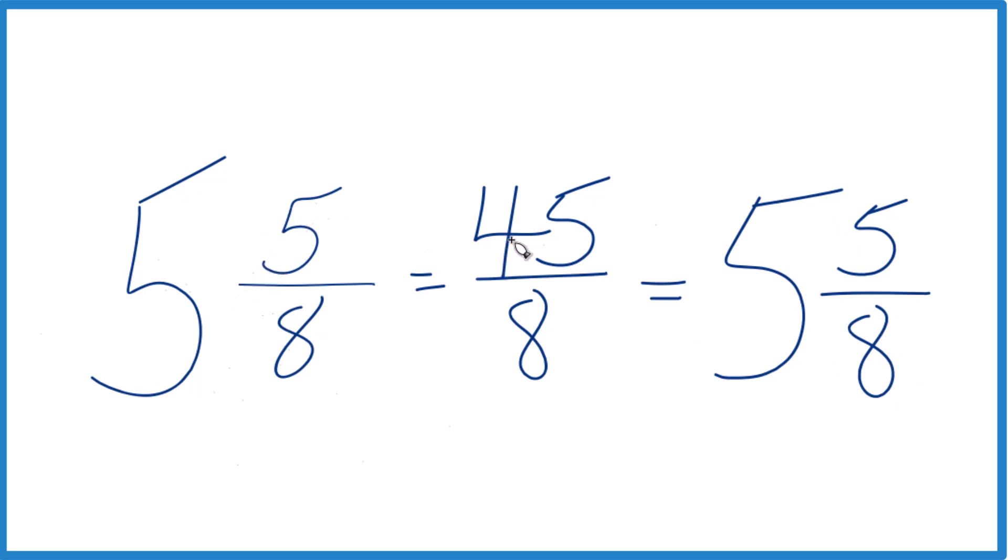And 5 and 5 eighths and 45 eighths, they're equivalent. They have the same value, just they're different representations. We have our improper fraction here, and then we have 5 and 5 eighths. That's the mixed number we started with.